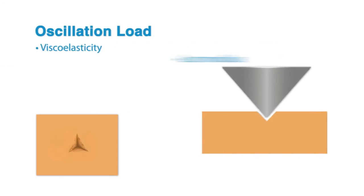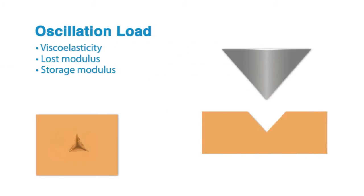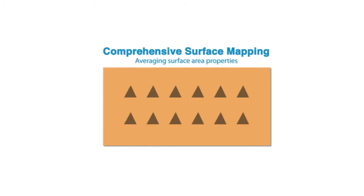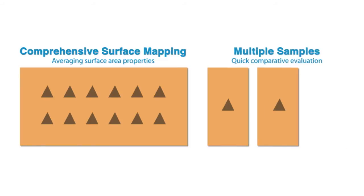And during testing oscillation load, it analyzes viscoelasticity, lost modulus and storage modulus. Comprehensive surface mapping of all your test functions and comparative evaluation of multiple samples gauge surface consistency and add to the Ninovia Mechanical Tester's total flexibility.